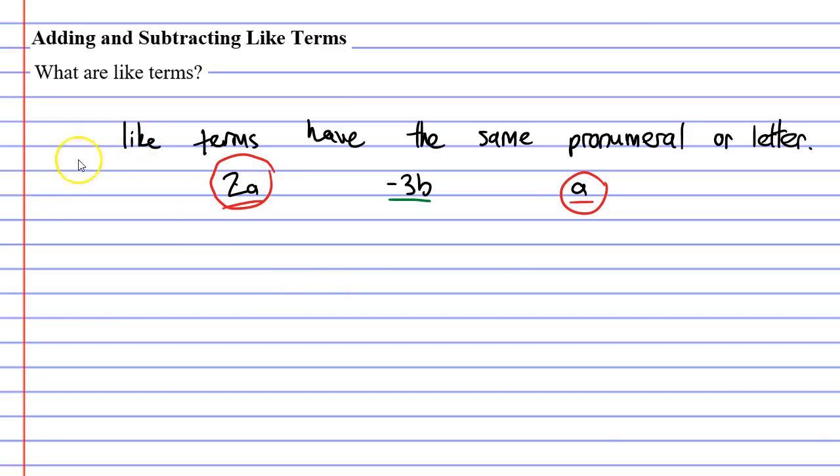Now, I did mention that this description is not always correct. A more correct description would say that like terms have the same set of pronumerals. I'm now going to show you why it's important to refer to this description here, rather than the description above.